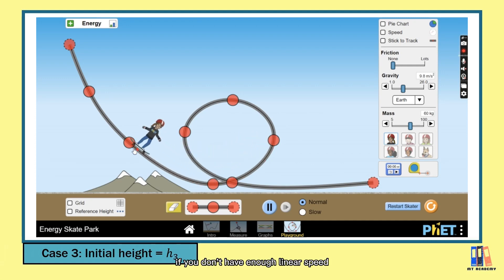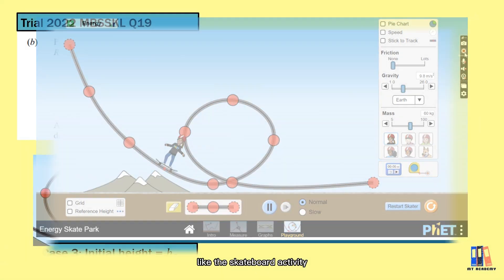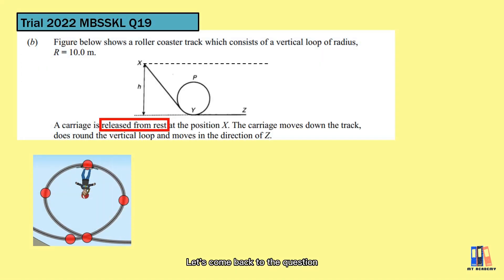So, in conclusion, if you don't have enough linear speed or you don't have enough height, you couldn't perform the circular motion but only a simple harmonic motion like the skateboard activity. So, let's come back to the question.